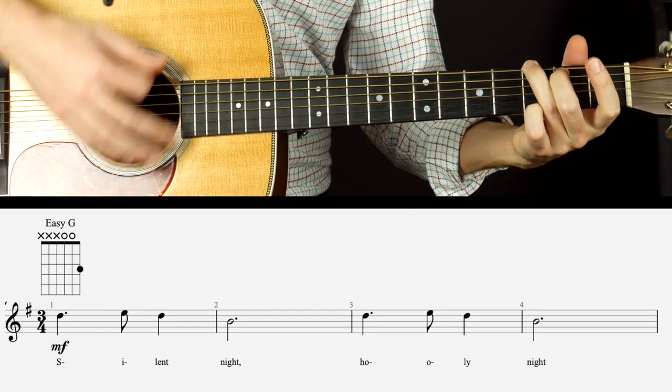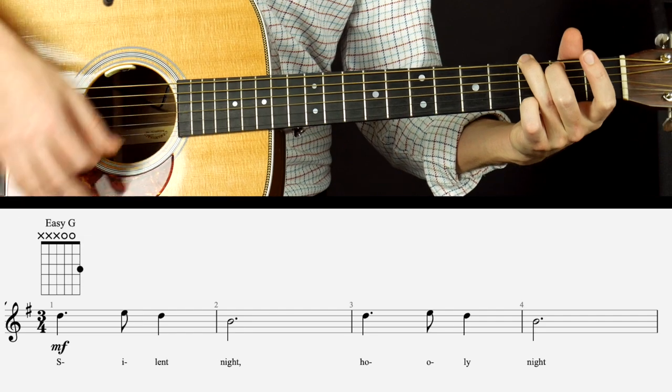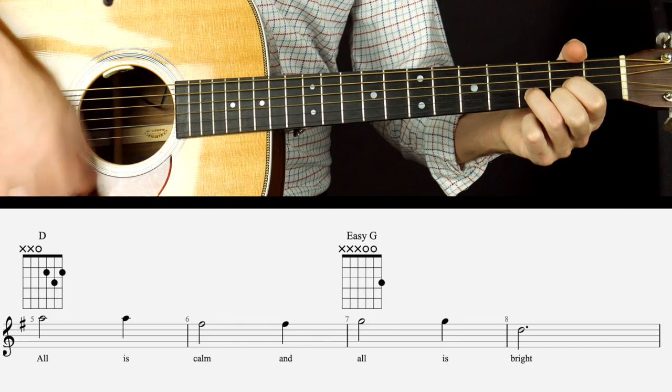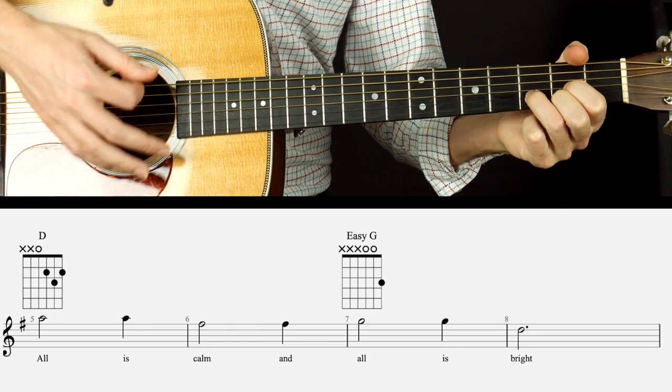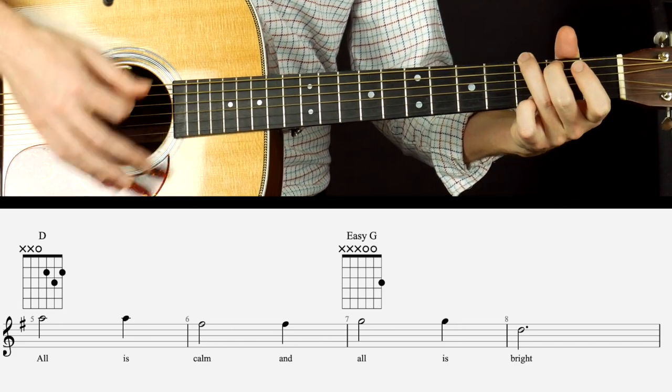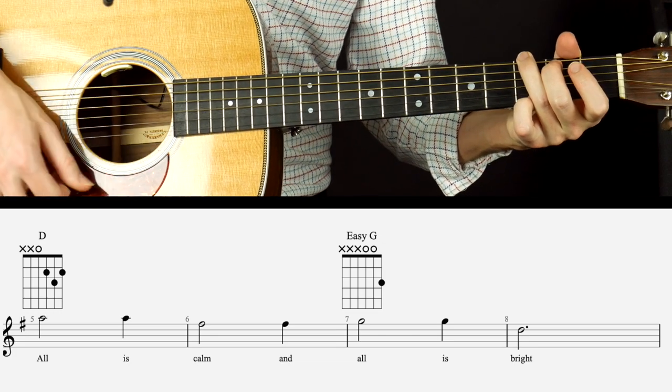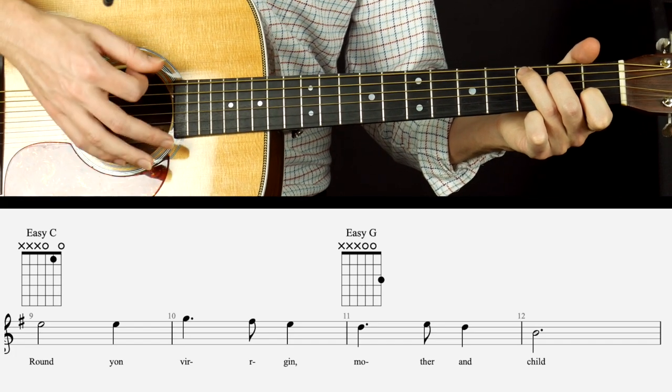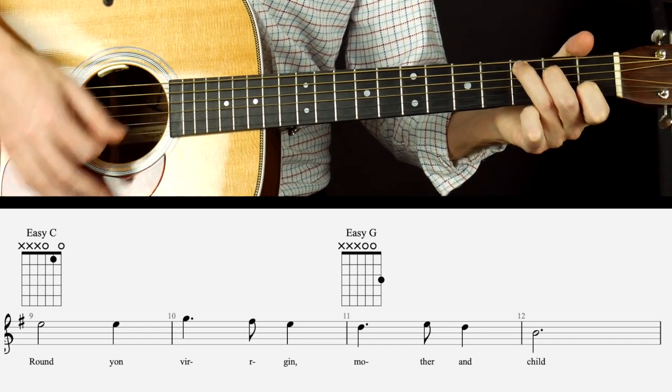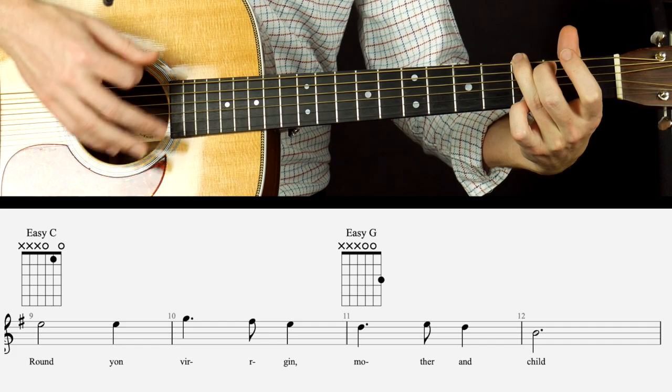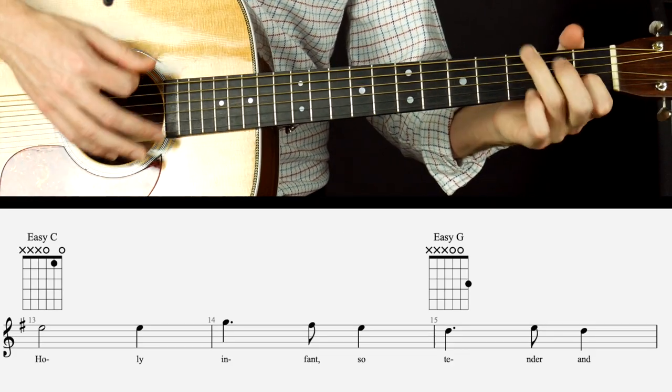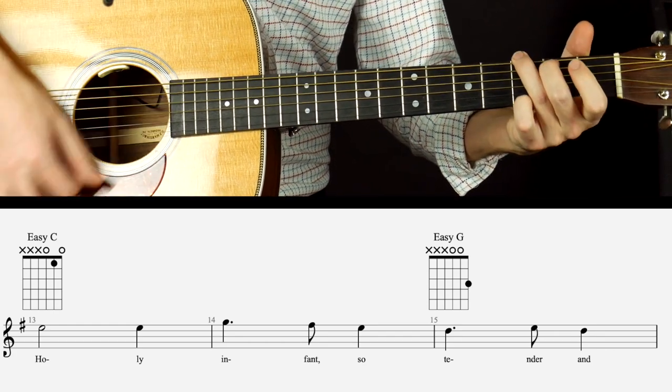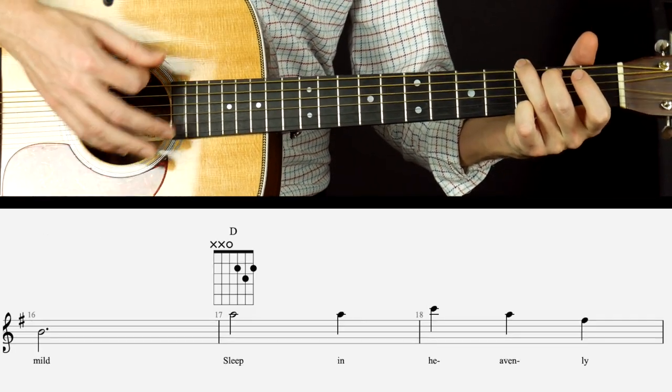Silent night. There's two measures, holy night, two more measures. Then two measures on the D. All is calm. Two measures on the G. All is bright. Two measures on the C. Round yon virgin. Two measures on the G. Mother and child. Two measures on the C. Holy infant so. Two measures on the G. Tender and mild.